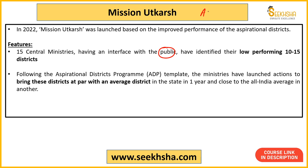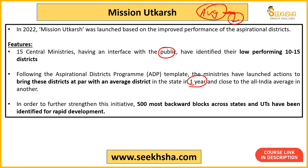The benchmark is the national average. Districts that are performing below average will be encouraged to reach the average within one year, and in the next year to exceed it. This is basically the criteria of Mission Uthkarsh — to grow the performance of backward districts and blocks.